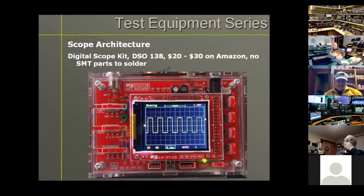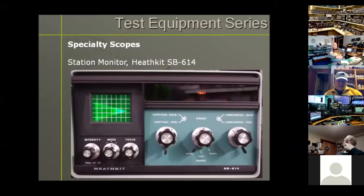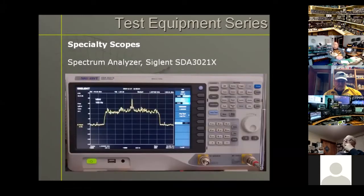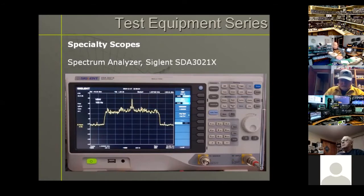There are some specialty scopes out there. For example, the Heathkit SP614 station monitor — these are real handy in the shack, relatively easy to find on eBay but slightly on the expensive side as a dedicated instrument. Also here's a spectrum analyzer from Siglent — you're looking at the RF display of 1340 kHz AM, our local AM station. There's a ton of functions built into this that older spectrum analyzers don't have. This particular one with the tracking generator option was $1,600.